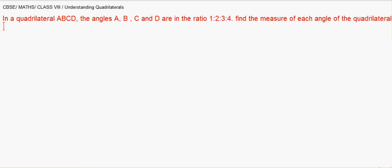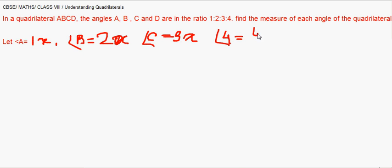As it is given in the ratio, we will be taking, let angle A, as it is 1 is to 2 is to 3 is to 4, we will be taking that as 1x. I will simply write freehand. Angle B will be then 2x, and angle C will similarly be 3x and angle D will be 4x.